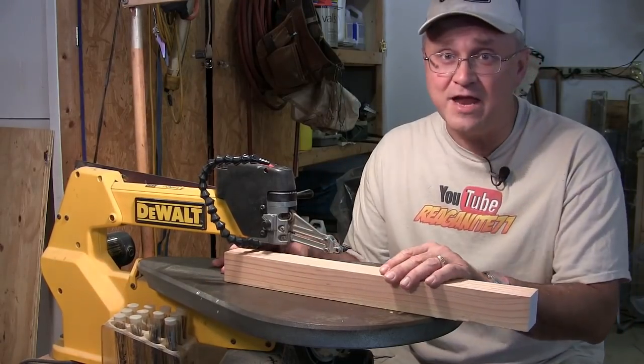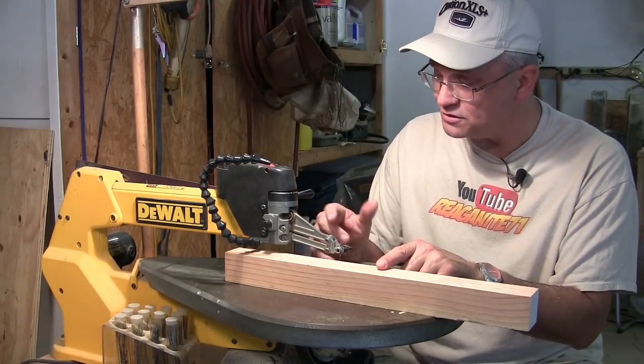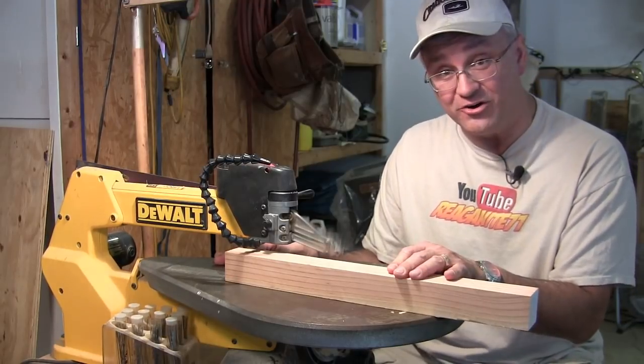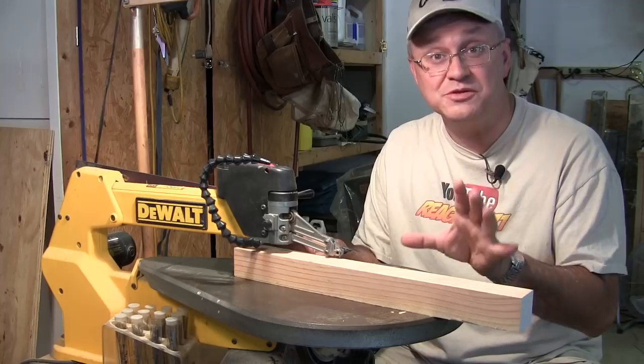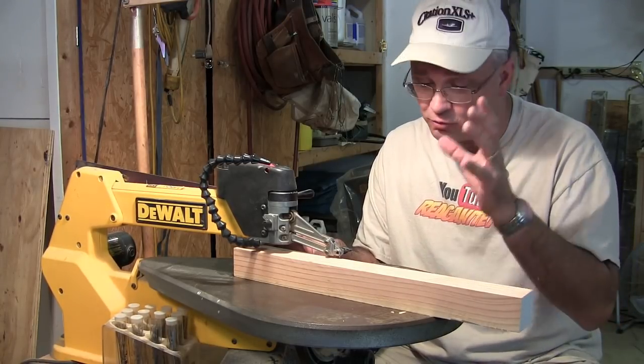The reason for that is because if the block were any bigger, then in the case of my scroll saw, the DeWalt 788, the arm would actually hit it when you turn it on. That would cause all kinds of problems and mar up the wood. So in my case, I got to keep it down below an inch and seven-eighths or right at it.